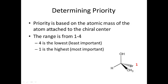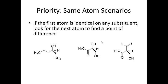Of the remaining groups, we look at the first atom attached to the chiral center. From the chiral carbon we go to oxygen or to carbon. Carbon has an atomic mass of 12, oxygen has 16, so oxygen is next in priority. Then carbon, and then hydrogen is number 4.